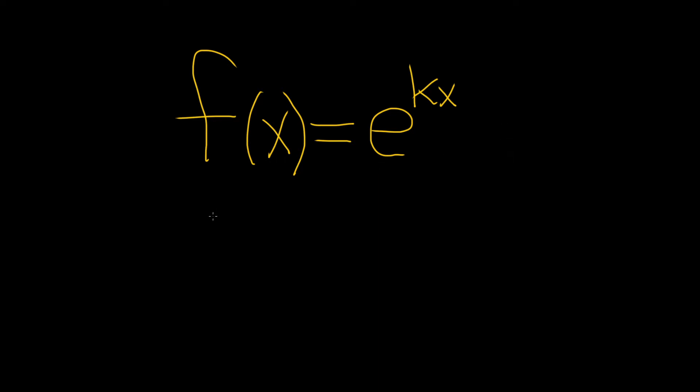So the first derivative, f prime of x, let's work that out. The derivative of e to the x is just e to the x. So here, it's e to the kx. You're going to use the chain rule. It'll be e to the kx - that's the derivative of the outside. You leave your inside piece untouched, and then you multiply by the derivative of the inside.